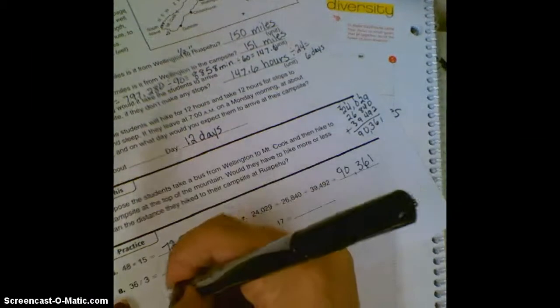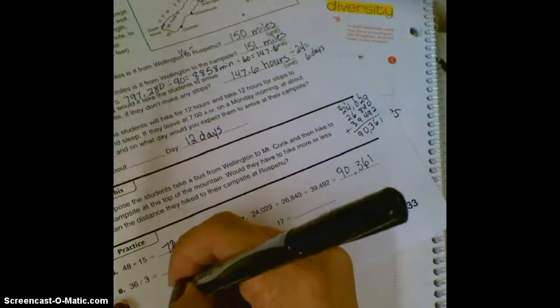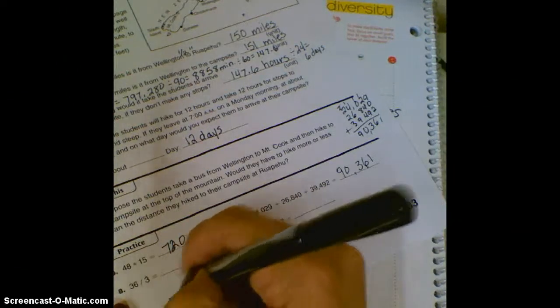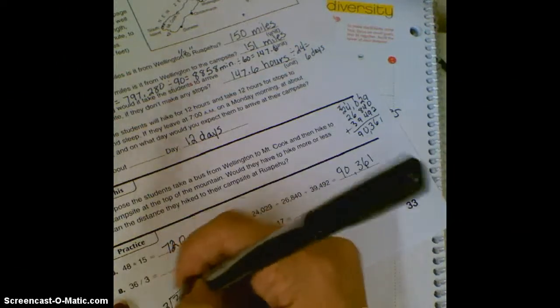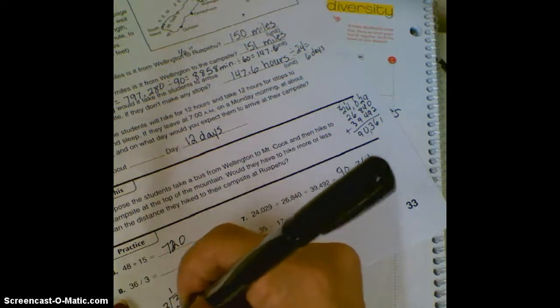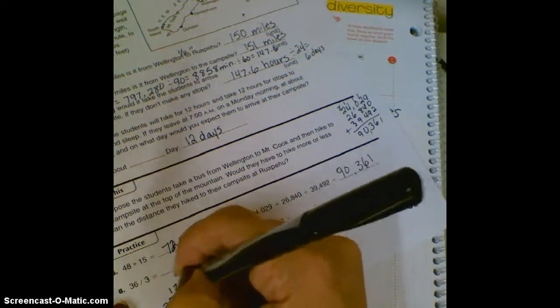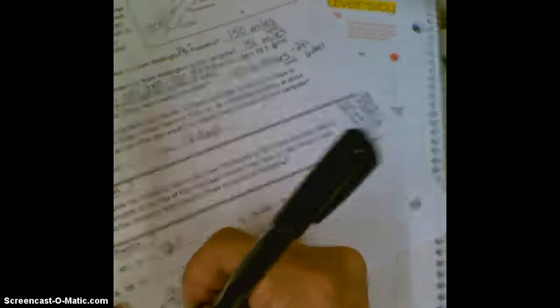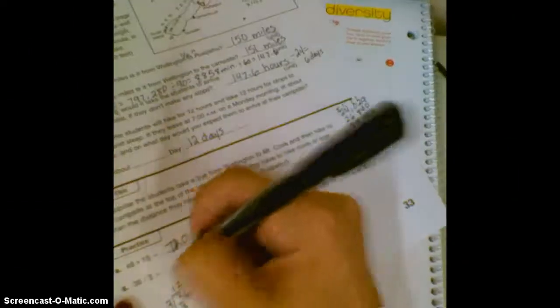36 divided by three. Maybe you just know this, but if you don't we can do it the other way, and you find out it is 12.